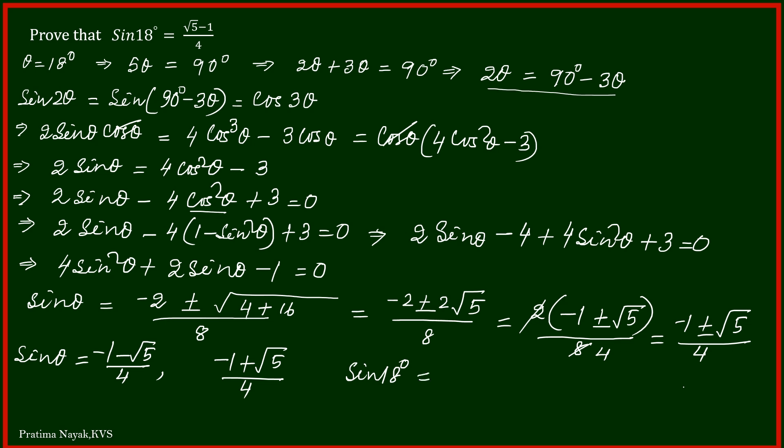If I take negative 1 minus root 5 over 4, it will be negative, so it is not possible because sine 18 degrees is positive. So sine 18 equals square root 5 minus 1 over 4.